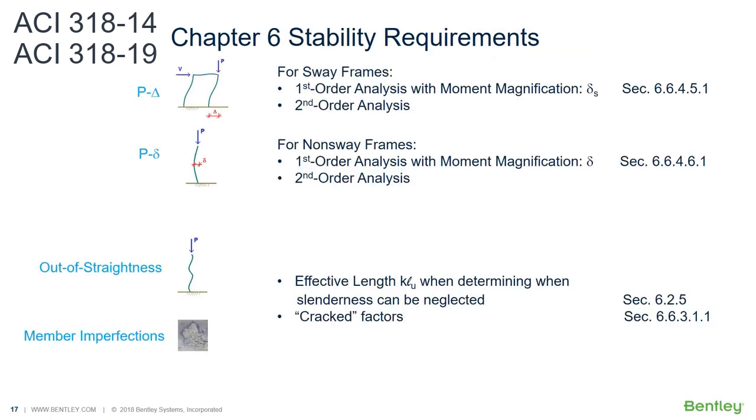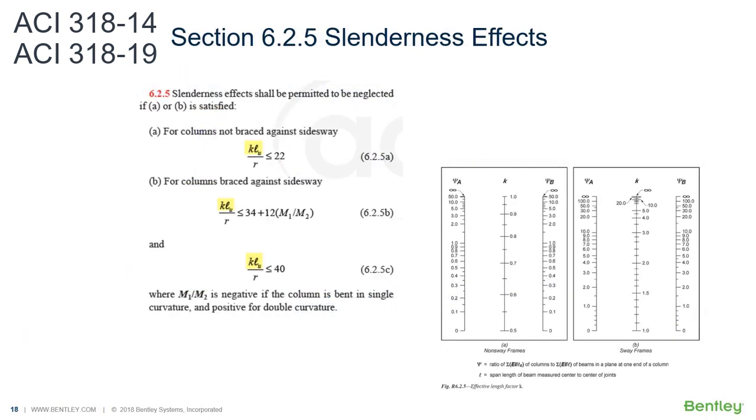The geometric imperfection of out-of-straightness and the member imperfections can be considered through the use of effective lengths, KL. The nomographs used to obtain the K factors have been calibrated to include the impact of these imperfections. Note that the K factor is used in the determination of when the slenderness effects can be neglected.